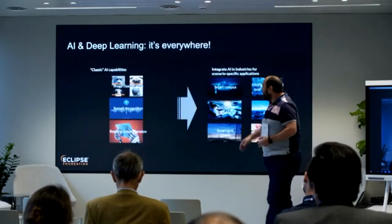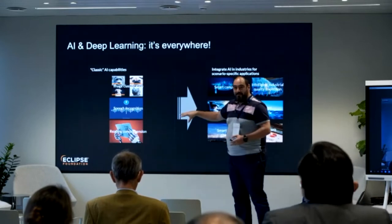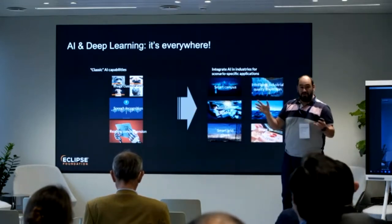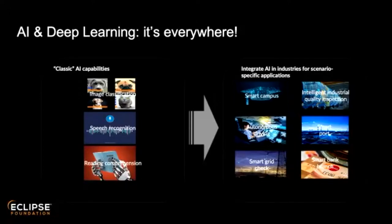We can implement AI and deep learning in a bunch of different scenarios. Classically, we do image classification, and we're still doing that. We also do speech recognition and reading comprehension. These use cases, while not basic in terms of implementation, can be applied across many industries.